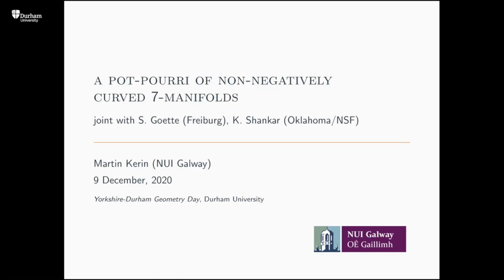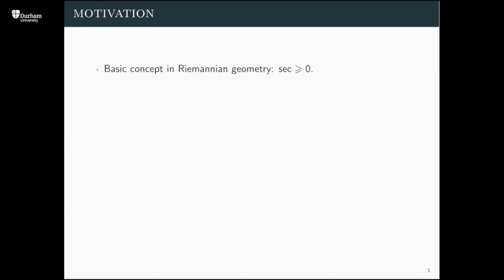I want to talk about non-negatively curved seven manifolds, and everything I say is joint work with Sebastian Goethe and Ravi Shankar. As some basic motivation about non-negative curvature — it's of course one of the most fundamental concepts in Riemannian geometry. As soon as you define a metric, the first interesting invariant is sectional curvature, and then it's natural to talk about sectional curvatures with a sign, and yet there aren't very many general results known.